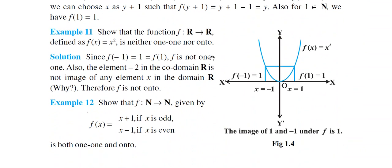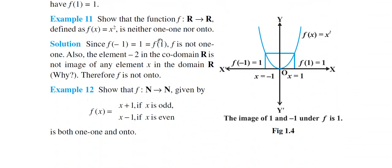From the 11th example we will move forward in this lecture. Example 11: Show that the function f: R→R defined as f(x) = x² is neither one-one nor onto. In the previous examples also, we had to check whether given functions were one-one or not, onto or not. This question is similar — only the function's definition has changed.